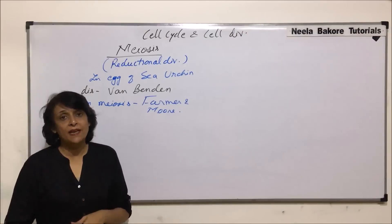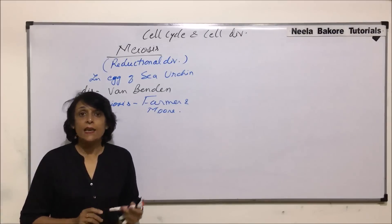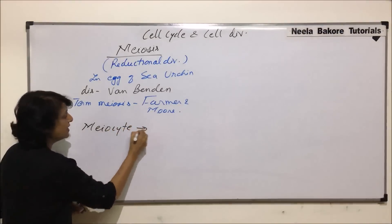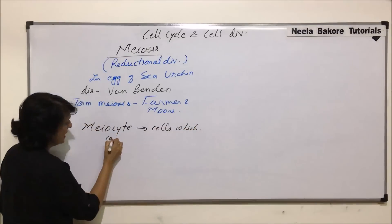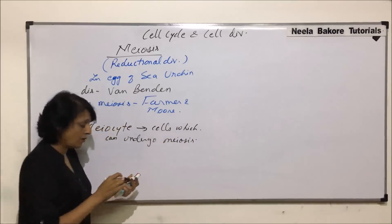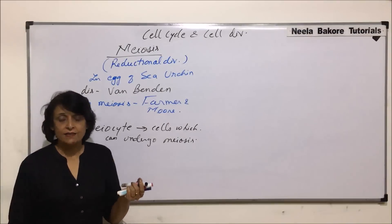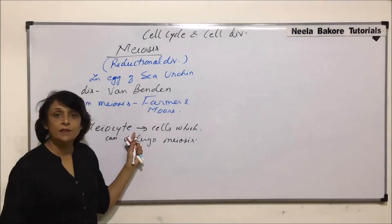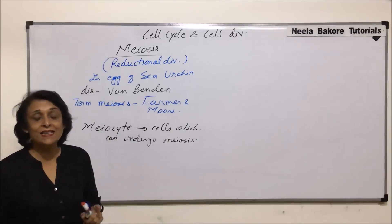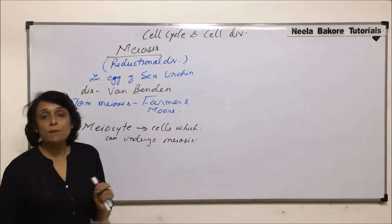Meiosis takes place in almost all eukaryotic cells which undergo sexual reproduction. The cells in which meiotic division takes place are known as meocytes. In higher organisms, the cells of the gonads, that is germinal epithelium, are the cells which divide by meiotic division and produce the haploid cells which we call the gametes. Such type of meiotic division is known as gametic meiosis.